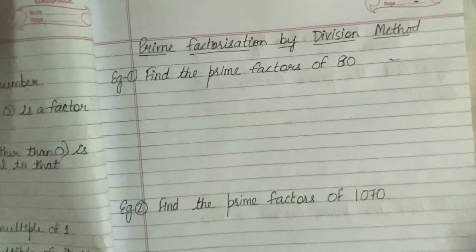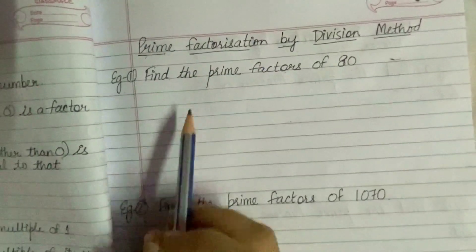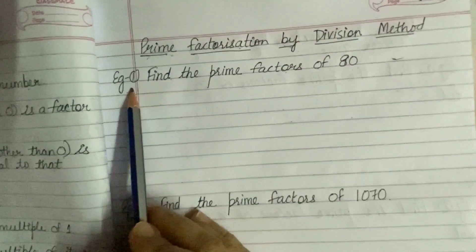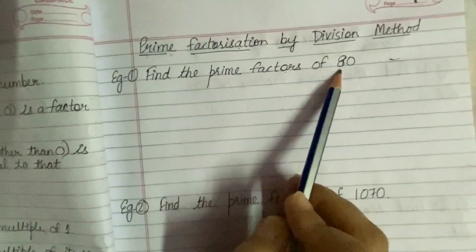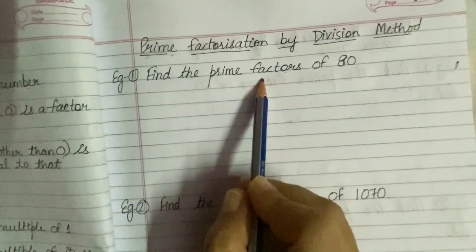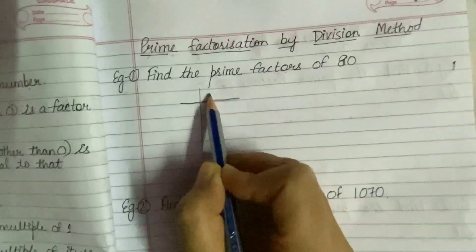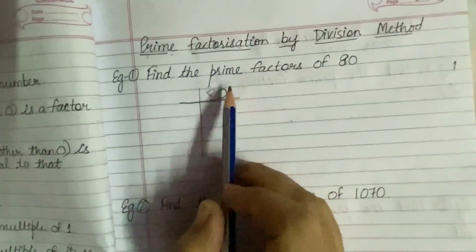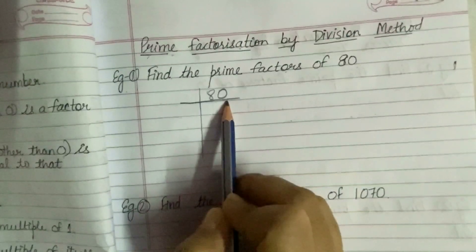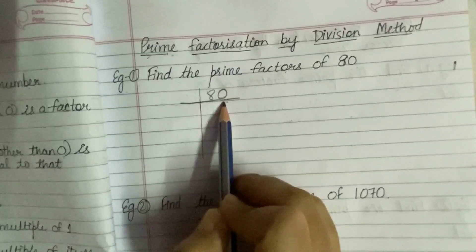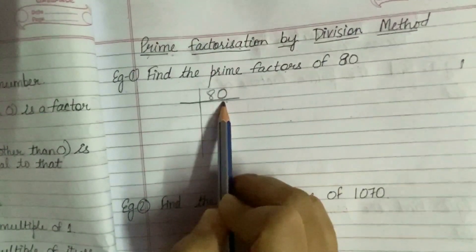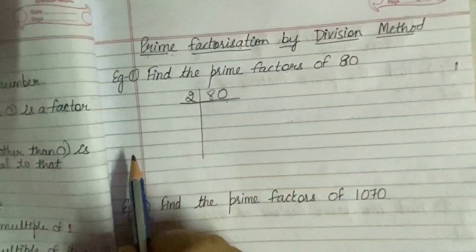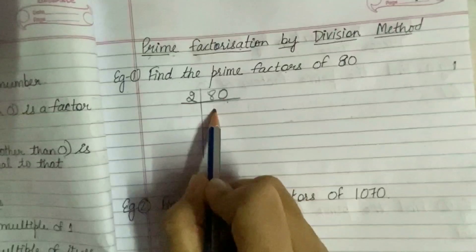Now we are going to discuss the different methods of prime factorization. The first is prime factorization by division method. In this, we are taking the first example: find the prime factors of 80. We write 80 in the table. We need to find the smallest prime number that can divide 80 without leaving any remainder. The digit at the 1's place of 80 is 0, which means 80 is divisible by 2. So we write 2, and the quotient will be 40.